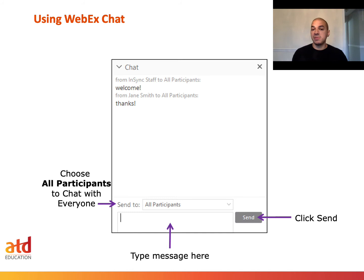The really neat thing is you can either communicate with everybody in the presentation, or if you wanted to talk to a specific peer, you can send a message directly to them. Once everything is filled out in the message box, all you have to do is click send for that message to go through.